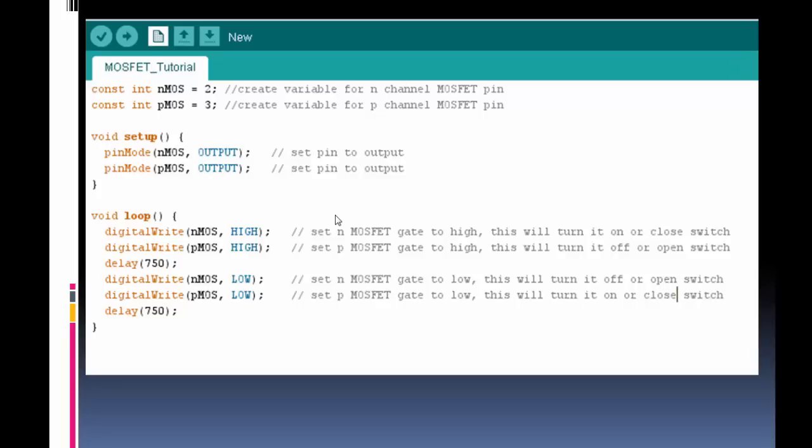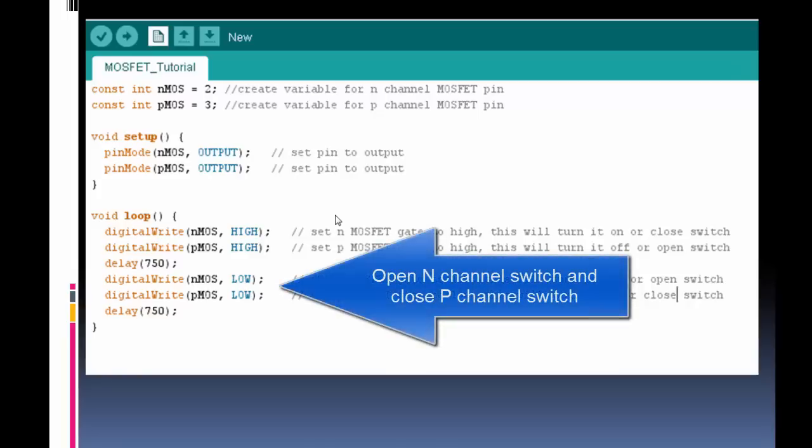I then delay for 750 milliseconds. Then I do a low on each, and we're going to have the opposite. The N-channel is going to open. The P-channel is going to close and conduct.